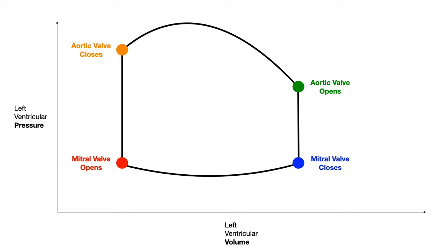The orange point represents where the aortic valve closes. The red point represents where the mitral valve opens. The blue point represents where the mitral valve closes. And the green point represents where the aortic valve opens. My recommendation is to memorize the orange point and the blue point, because if you understand that orange is aortic closes and blue is mitral closes, you can figure out what green and red are by working through the normal physiology of the heart as you go from systole to diastole.